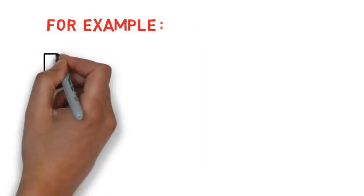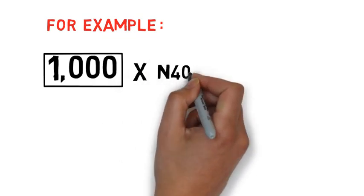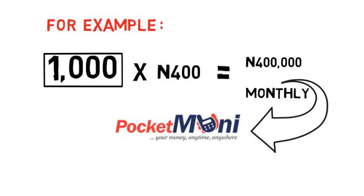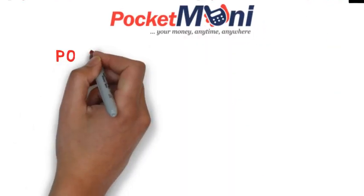That is the huge steady flow of free extra income you would be generating monthly with Pocket Money. For example, with 1,000 church members, or 1,000 students, or 1,000 customers, or 1,000 taxpayers, or 1,000 employees in your payroll, you would be generating up to 1,000 times 400 Naira — equal to 400,000 Naira monthly with Pocket Money. This is the 21st century discovery for 21st century people and organizations, powered by eTransact.